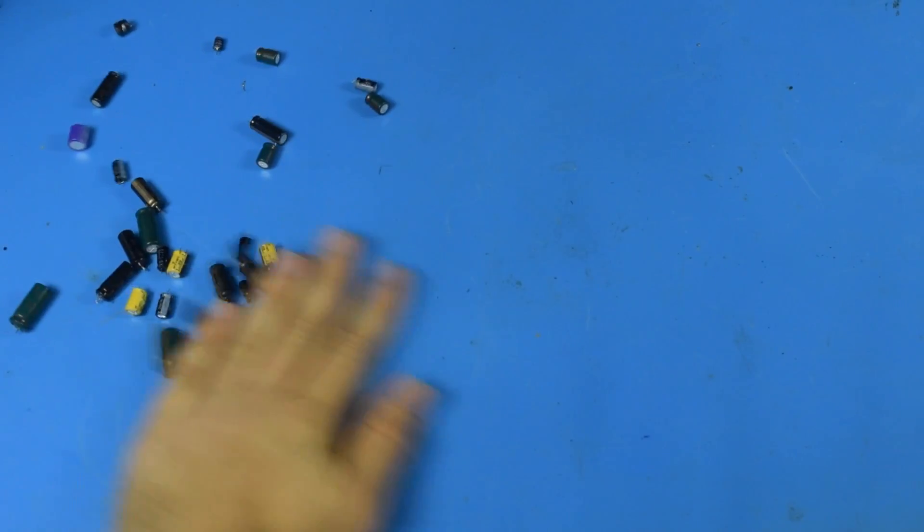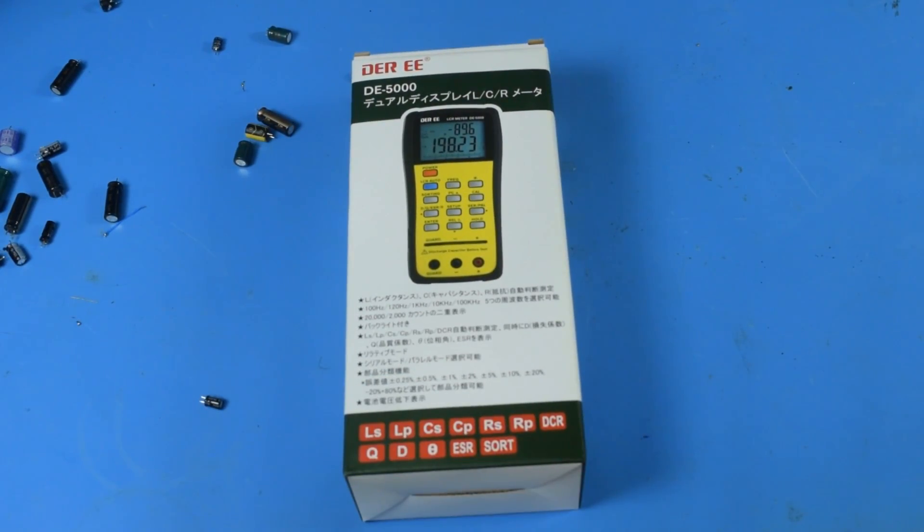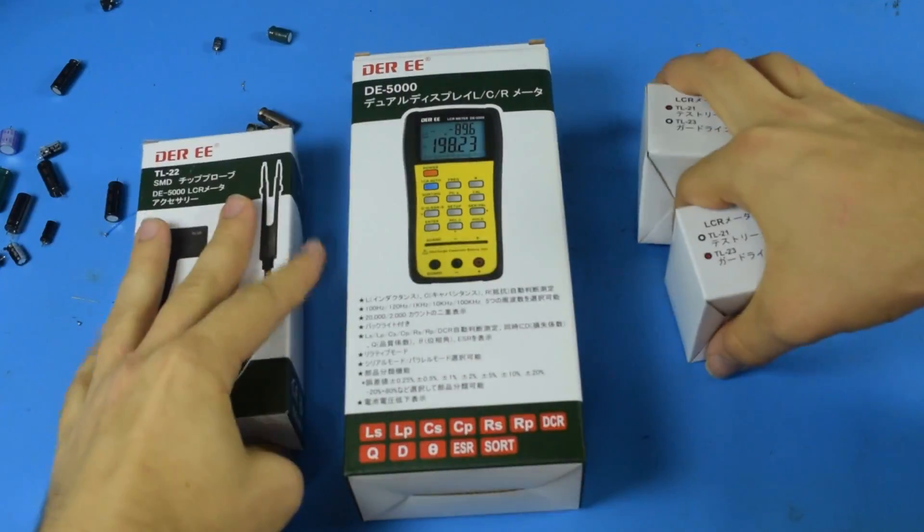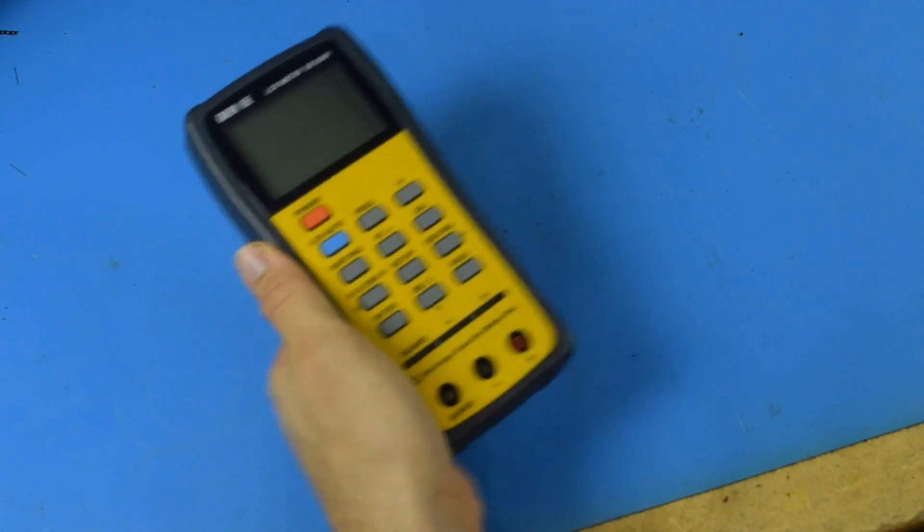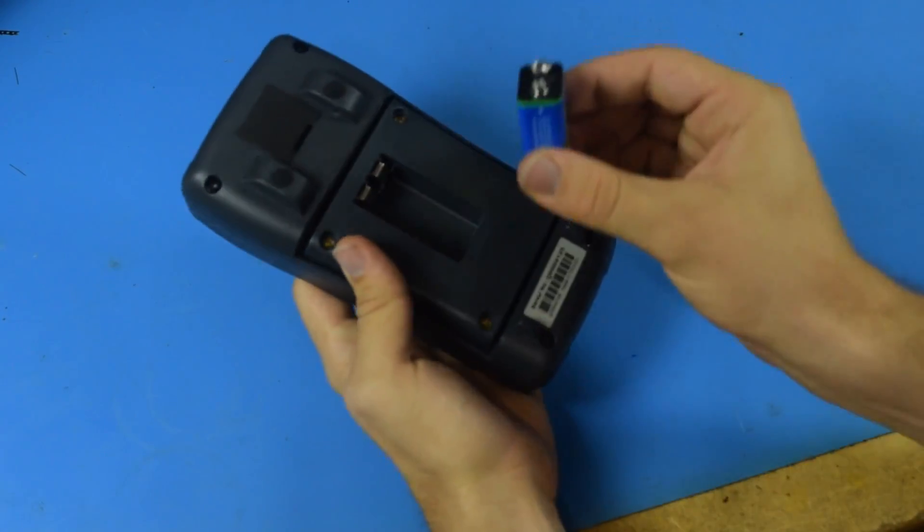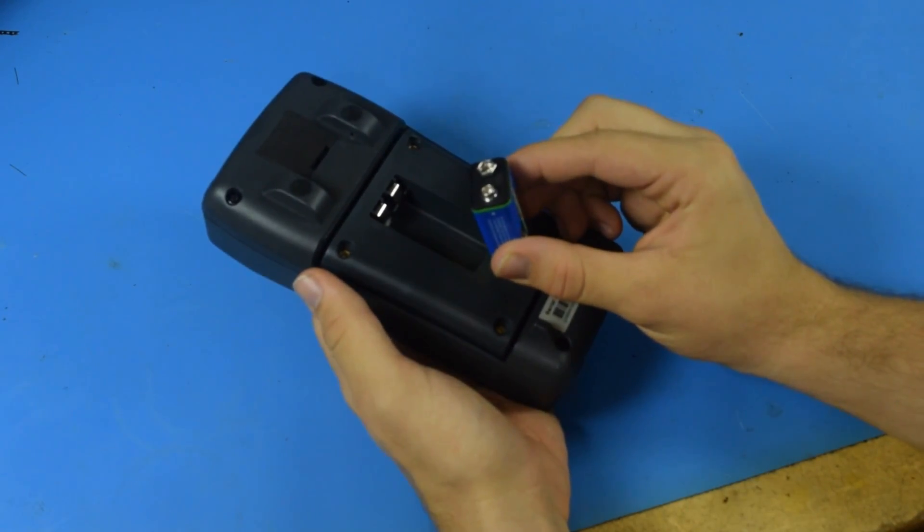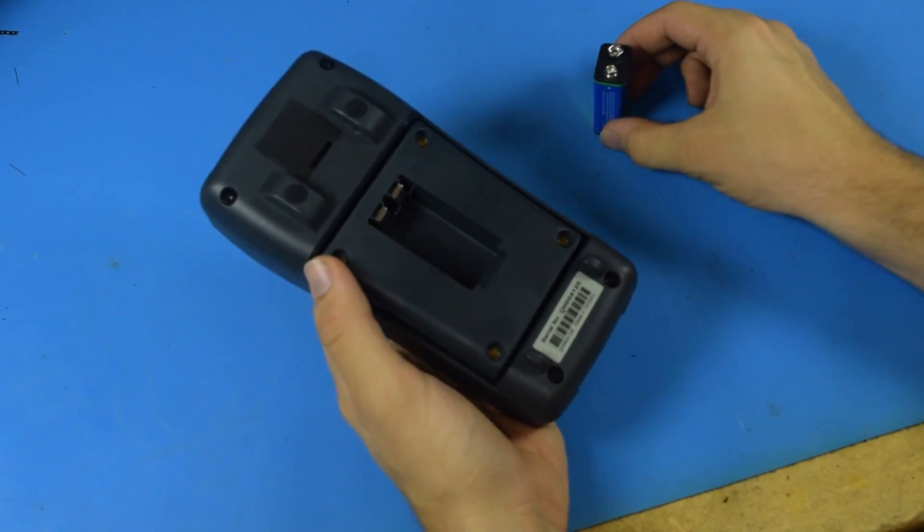So I finally decided it was time and bought an ESR meter. Not only that I bought it with all of the kit and caboodle to go with it. And as soon as I got it out I got the battery out of the box with it and I grabbed it and I put it in just like that and that was wrong. That's backwards. And I fried it.